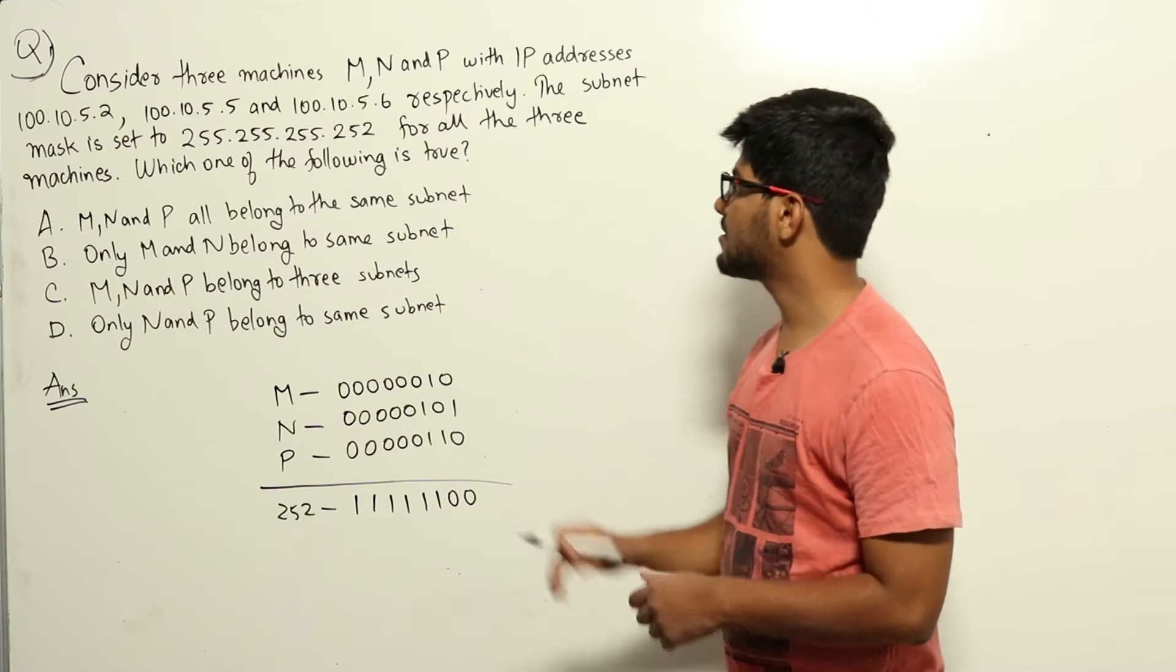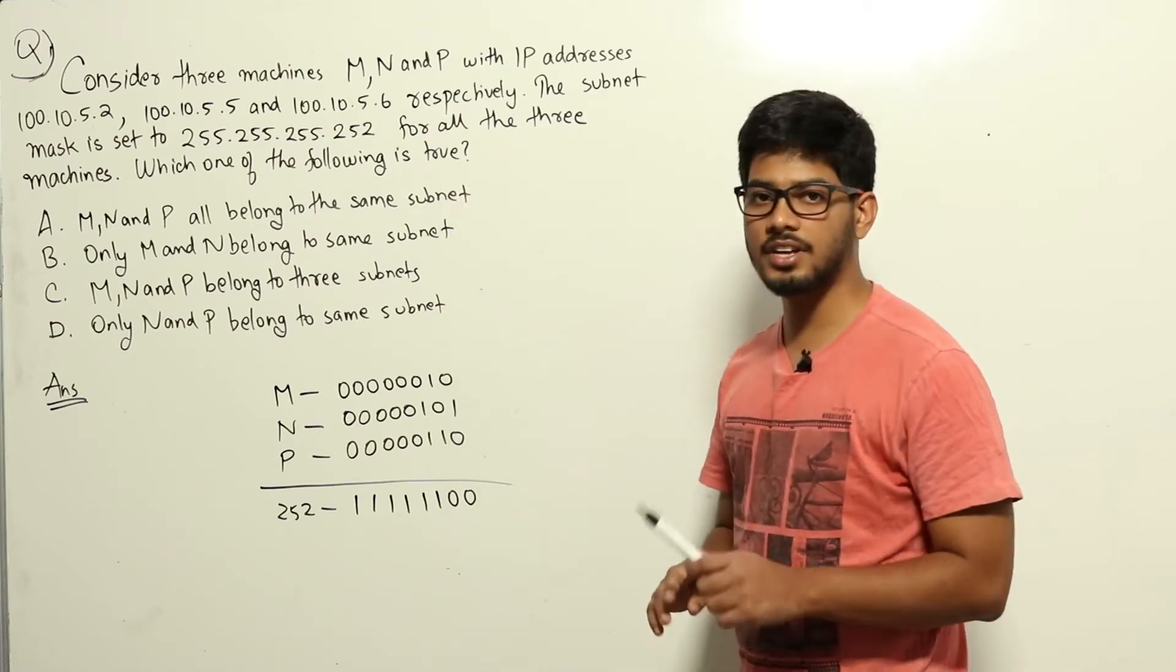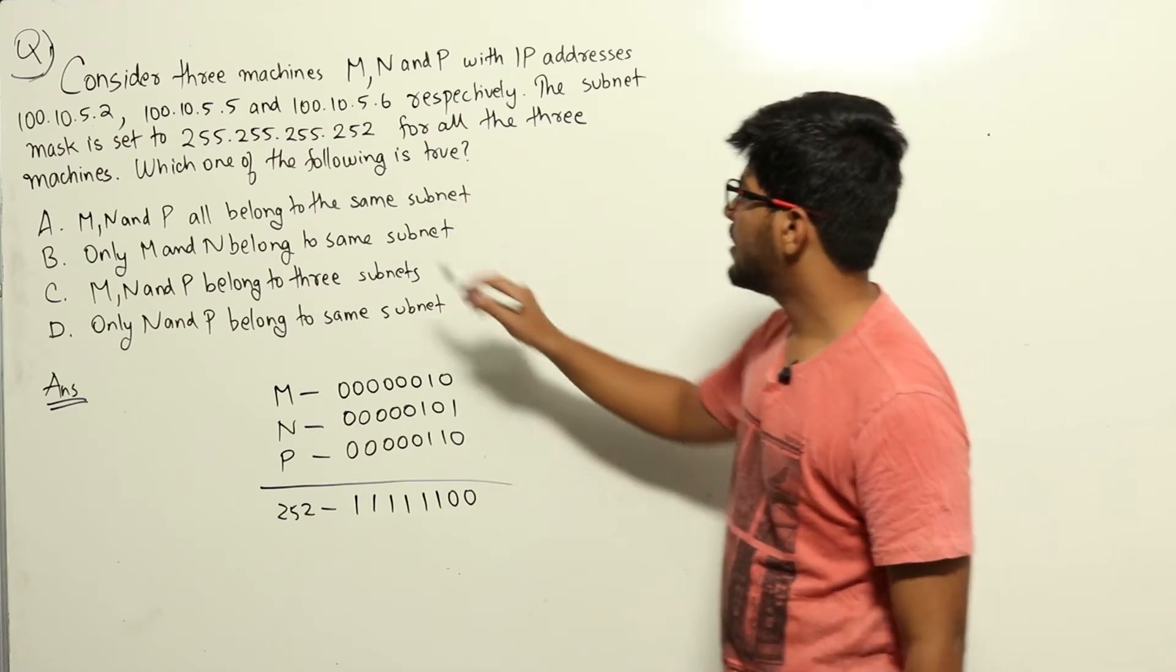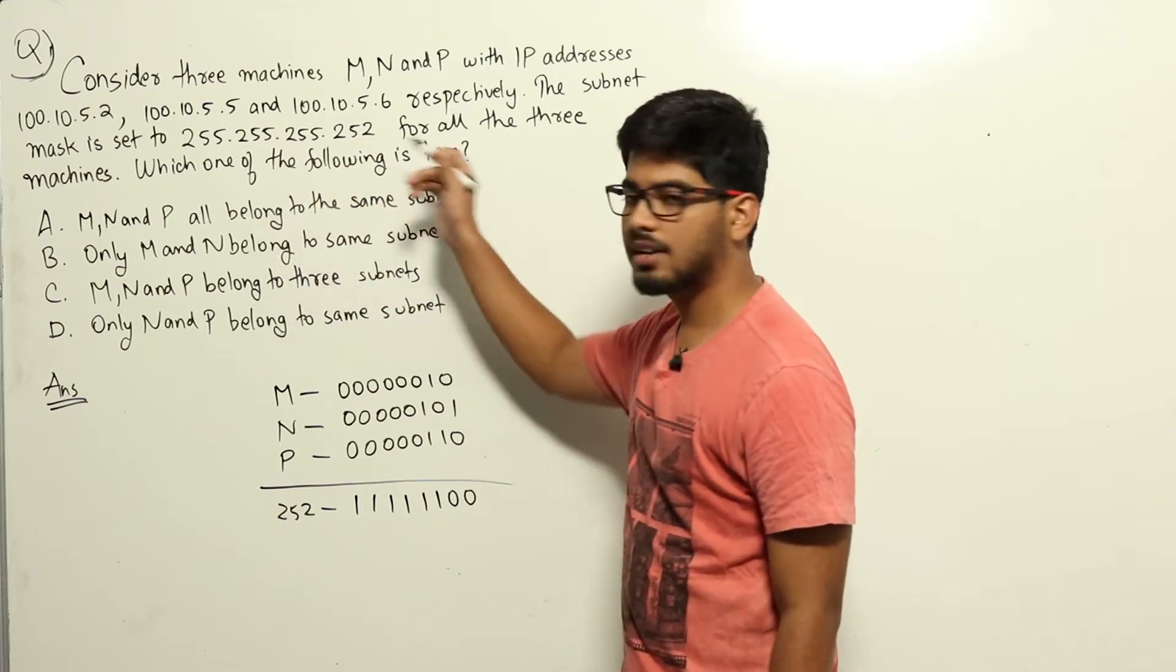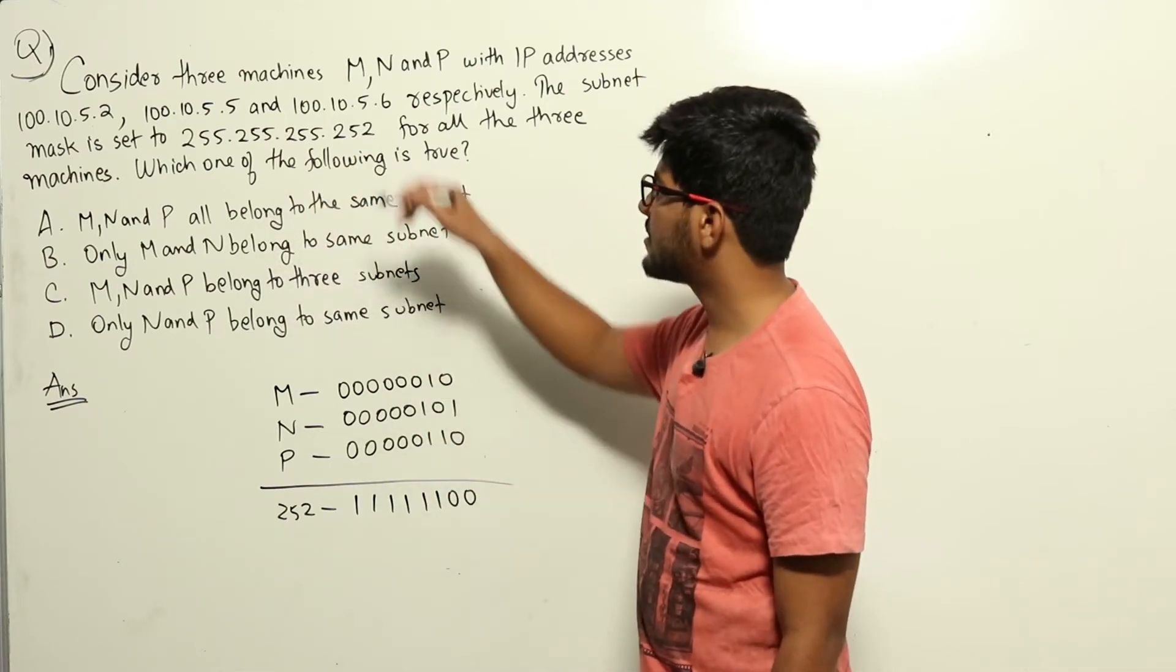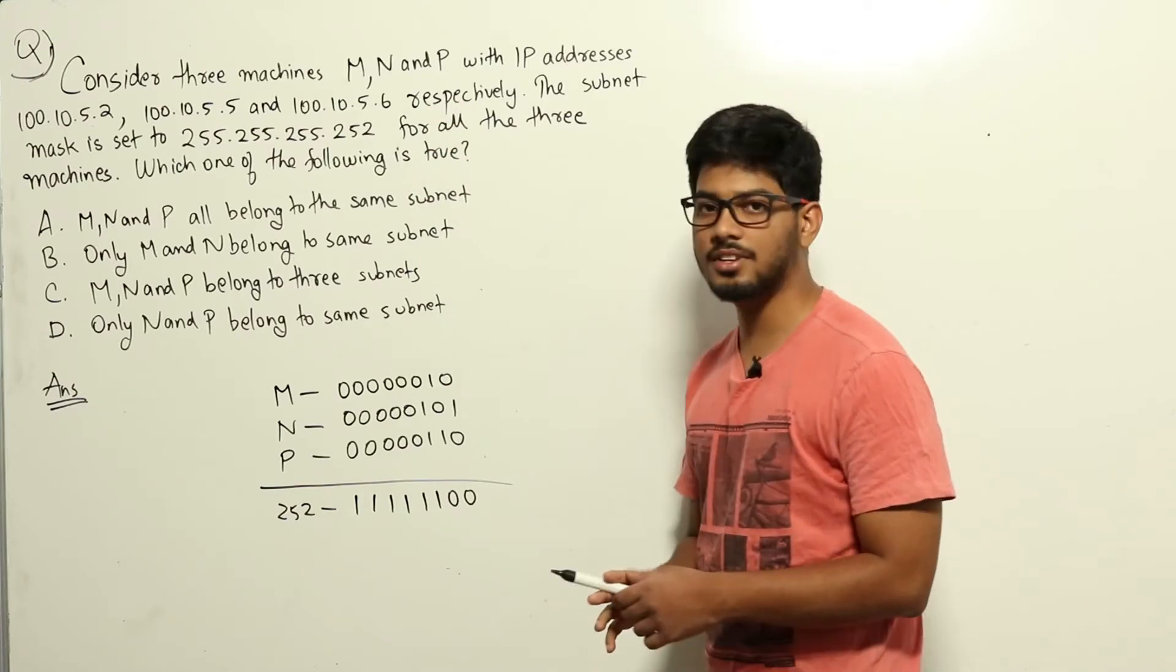Bitwise AND of subnet mask and IP address will give the network ID of that particular IP address. Based on the network ID, we will get which is the subnet. If all three have the same network ID, that will mean all three belong to the same subnet.